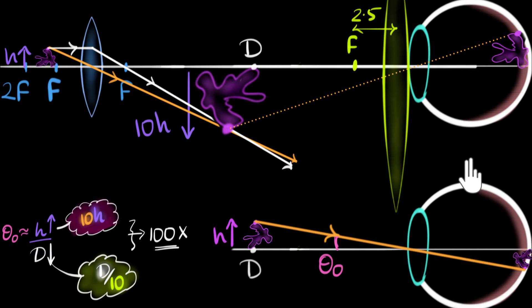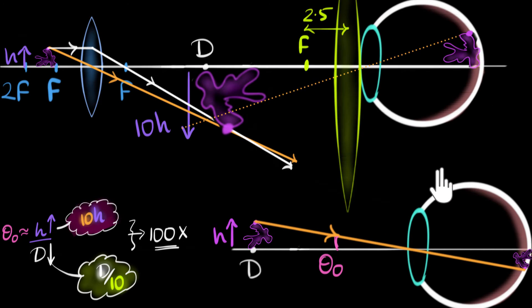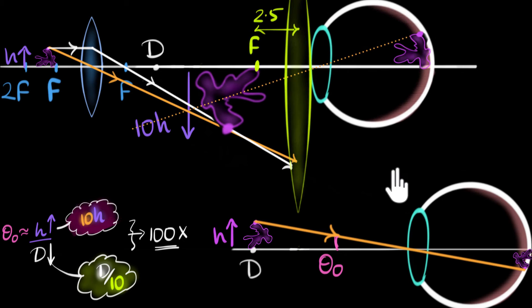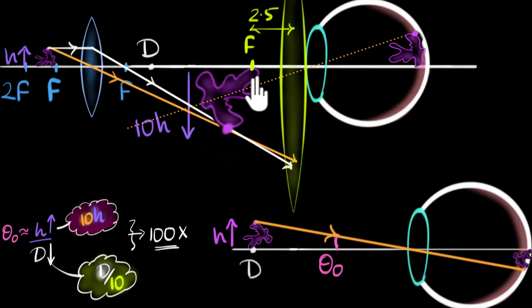And now with the help of this convex lens, we can bring this entire system, our eye and the lens, all the way till here so that the object, the new object for us, it's actually the image. So I'm talking about this image, which is the object for us. That comes right at the principal focus. Because when it comes at the principal focus, what's going to happen is that these rays of light are going to be parallel to each other. And now, our eyes can focus these parallel beams of light on the retina. Now, as a result, can you see that the new angle subtended is about 10 times larger?